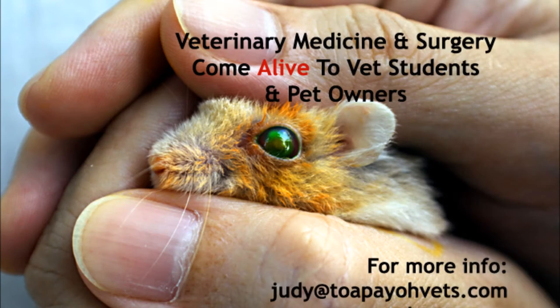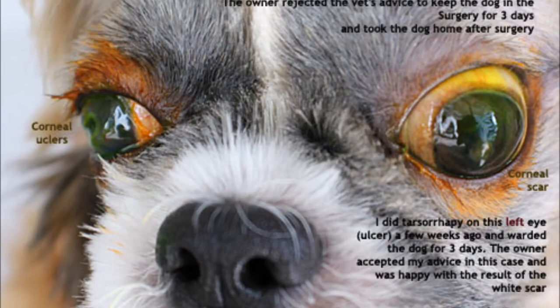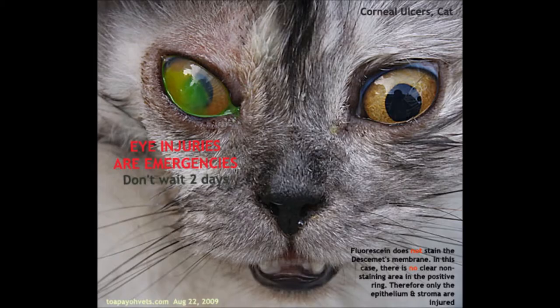Not only in hamsters, the use of fluorescent stain tests can also be done in other animals such as dogs, cats and even terrapins.